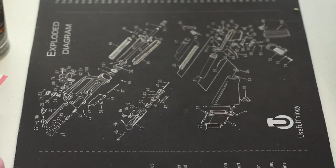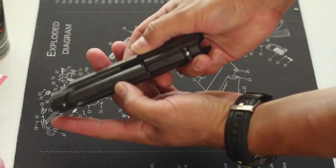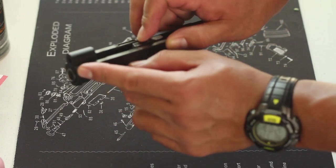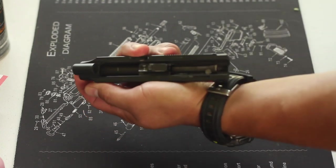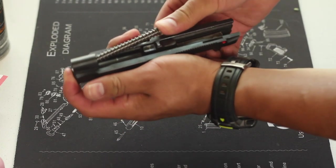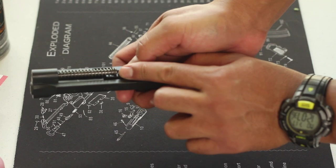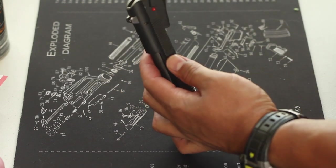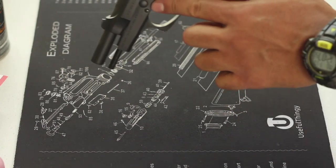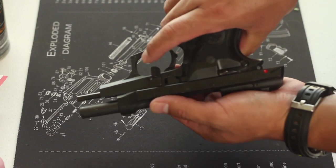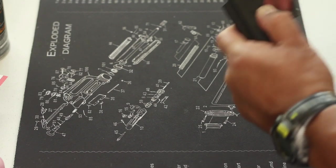Now let's reassemble. Take the guide rod, put the spring back on. Put the barrel back into the slide. Make sure it locks in place just like so. Now reinstall the guide rod and recoil spring. Make sure it locks in place right there. Okay, now take the frame and line up the rails with the slide. Pull it back. Pull the slide release lever upward to lock the slide back. Push the button on the left side and pull the takedown lever back to the original position.